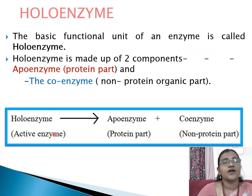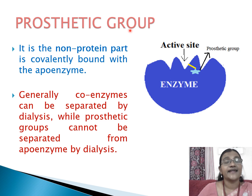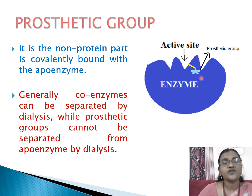The holoenzyme is the basic functional unit of the enzyme and it consists of two components: the apoenzyme, which is the protein part, and the coenzyme, which is the non-protein part. Together they form the holoenzyme. A prosthetic group is a non-protein part that is covalently bound to the enzyme. Coenzymes can be separated by dialysis, while prosthetic groups cannot be separated from the apoenzyme by dialysis.